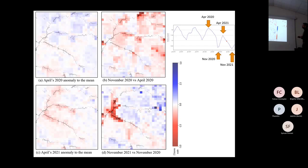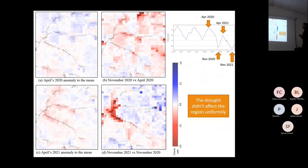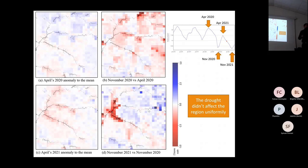The drought was located mainly in the reservoirs in the western part, where the Paraná River passes. This insight shows that the drought didn't affect the region uniformly, and providing this kind of spatial analysis at large scale gives valuable insights into how critical events are developing.